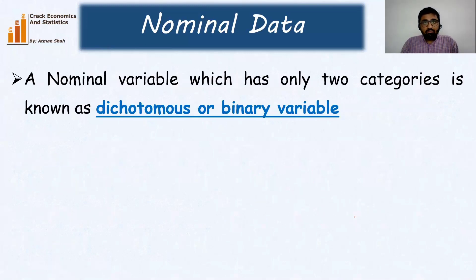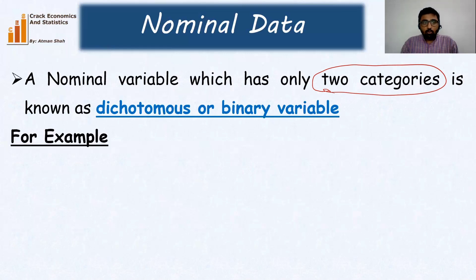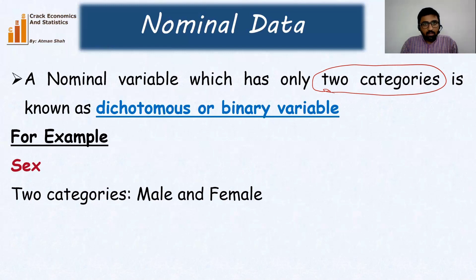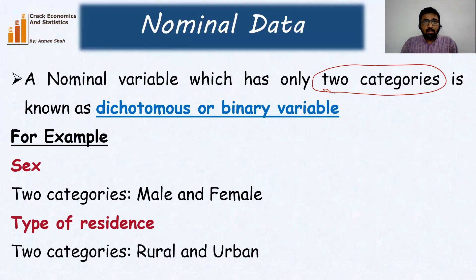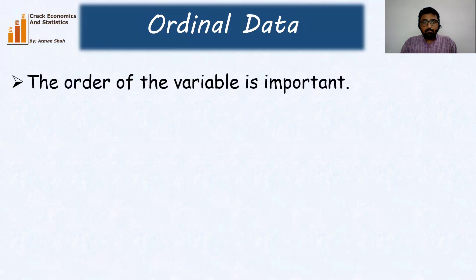A nominal variable which has only two categories is known as a dichotomous or binary variable. For example, sex has two categories — male and female — so it is a dichotomous variable. Similarly, if type of residence has only rural and urban, it is also a dichotomous variable. Suppose we have the variable income with only low income and high income groups — that also becomes a dichotomous variable because it has only two categories.